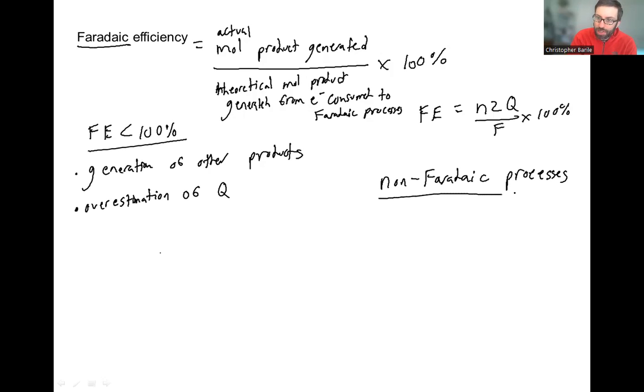Non-Faraday processes could be, one example is like double layer charging, double layer capacitance. That can give rise to current.